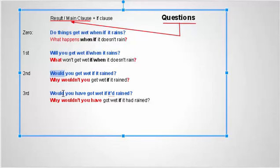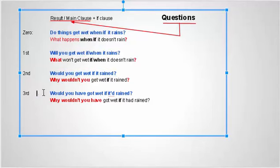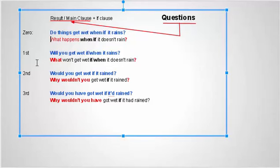Would and would you have — yes-no questions: 'Will you get wet if it rains?' 'Will you get wet when it rains?' 'Would you get wet if it rained?' 'Would you have got wet if it had rained?' For wh-questions: 'What happens when it doesn't rain?' 'What won't get wet when it doesn't rain?' 'What gets wet when it rains?' 'Why wouldn't you get wet if it rained?' 'Why wouldn't you have got wet if it had rained?'